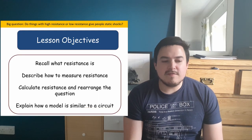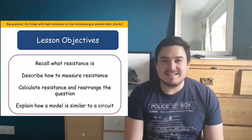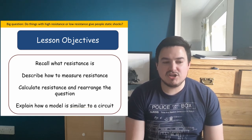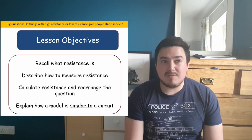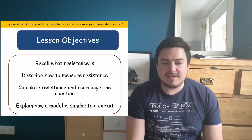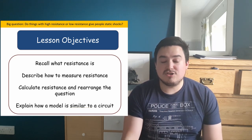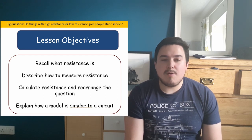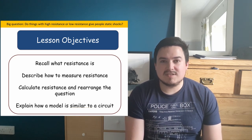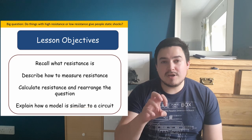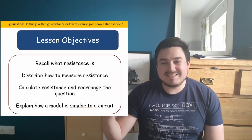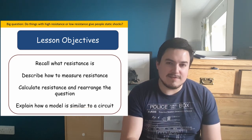Your objectives for today's lesson — there are four of them. First, we're going to define what resistance is and say what it's measured in. We're going to describe how to measure it, talking about the circuits we use and what we measure with those circuits. We're going to talk about how to calculate resistance and rearrange the equation. Finally, we'll explain how a model is similar to a circuit, looking at both its similarities and differences.